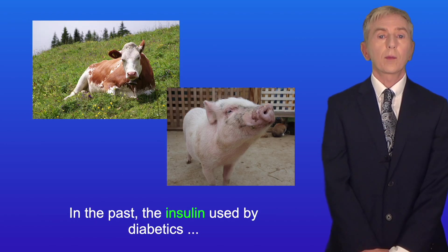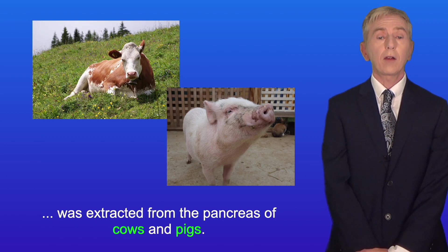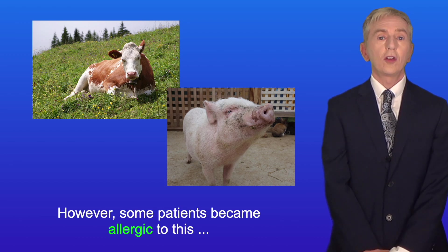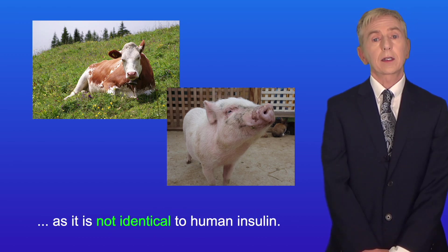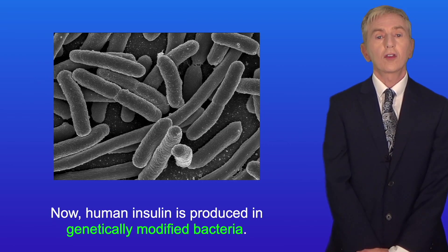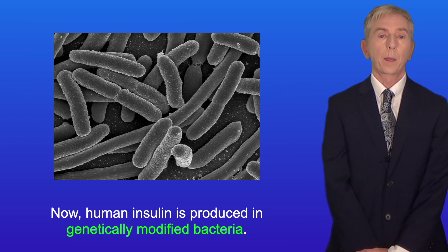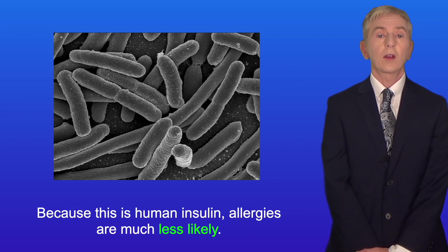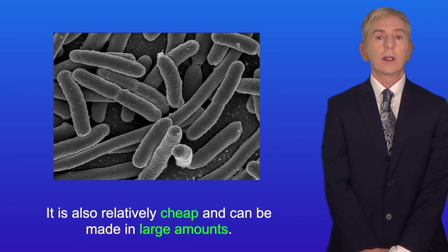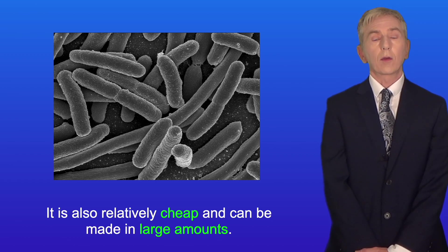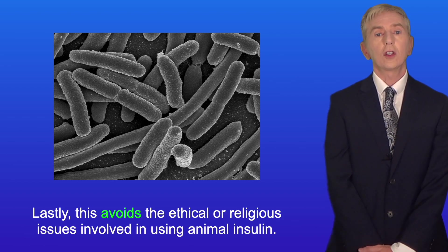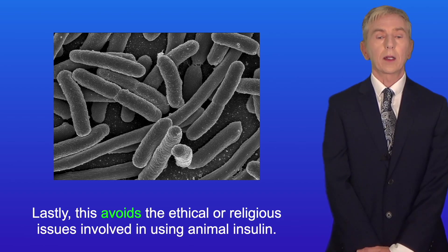In the past, the insulin used by diabetics was extracted from the pancreas of cows and pigs; however, some patients became allergic to this as it's not identical to human insulin. Today, human insulin is produced in genetically modified bacteria. Because this is human insulin, allergies are much less likely, it is relatively cheap and can be made in large amounts, and this avoids the ethical or religious issues involved in using animal insulin.